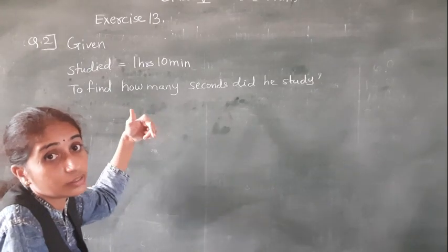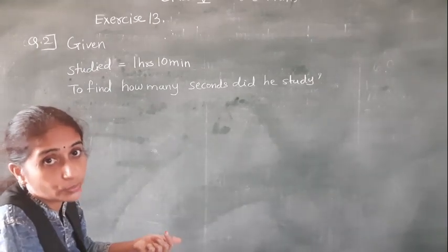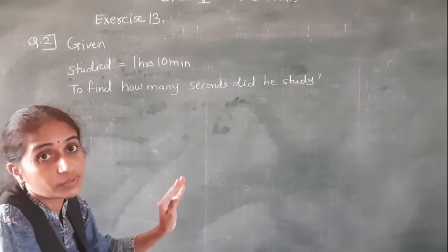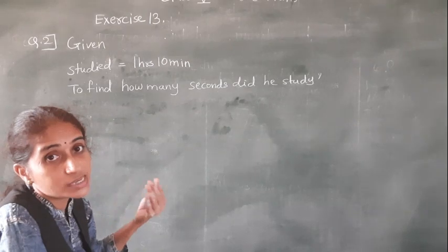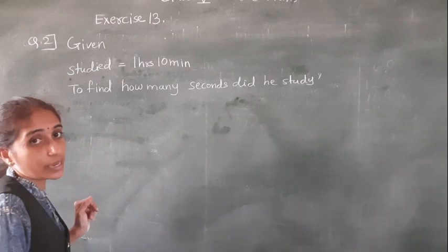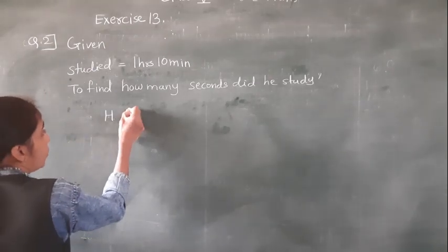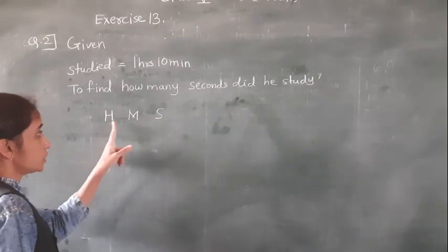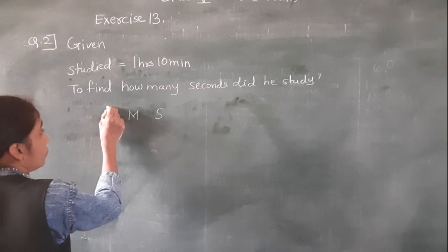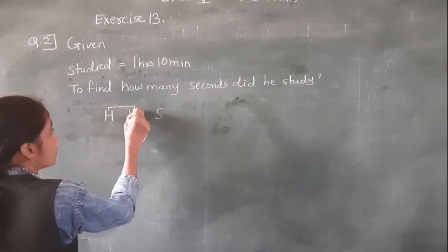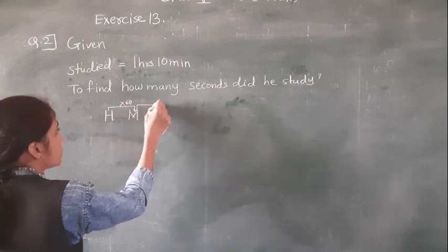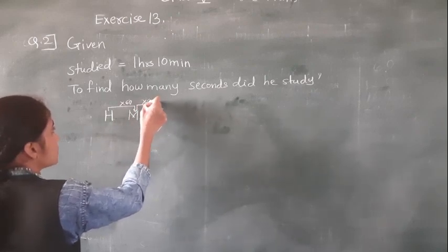We have to convert hours and minutes into seconds. Now again we are going to use the same HMS diagram. If we convert hours into minutes, we multiply by 60. And minutes into seconds, we multiply by 60. Here we have to convert into seconds.